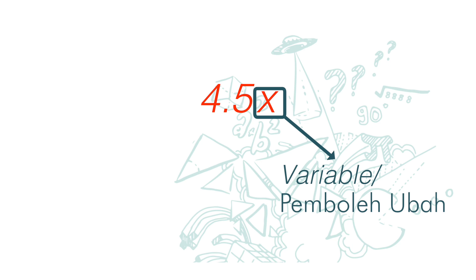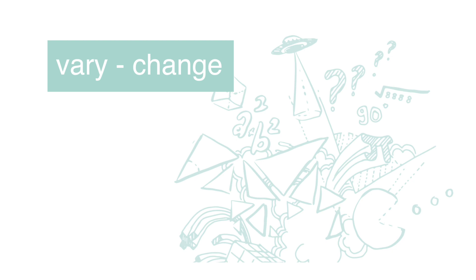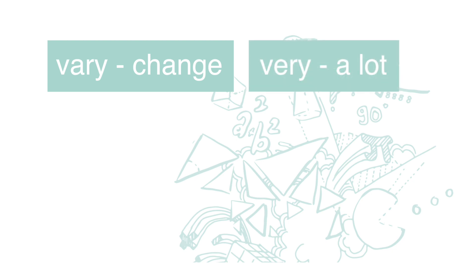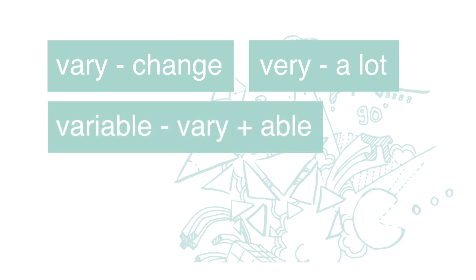Here x is called a variable because the number of nasi lemak we sell varies, or changes, from day to day — so we do not know how many plates we can sell today. Note: "vary" means change. This word is different from "very" — "very" means a lot or to a great extent.